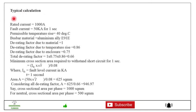Now for typical calculation for busbar area. Let's say rated current is 1000, fault current is 50 kA for one second, permissible temperature rise is 40 degree, that is the requirement. Busbar material is aluminum. Now derating factor due to material is 1, derating factor due to temperature rise is 0.86, and derating factor due to enclosure is 0.75. These are the available condition and data requirement for calculating the busbar.